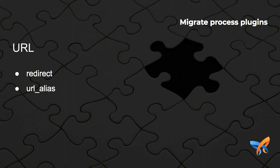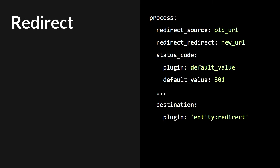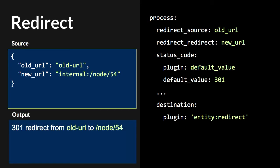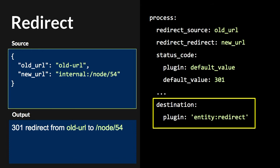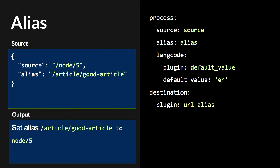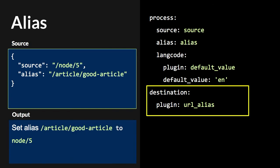For URLs, if you need to handle URL redirects or aliases — redirect is an entity in Drupal 8, so we can do a simple migration and it will import the data into the redirect entity using the destination plugin. The same for aliases: with the URL alias destination plugin, you are able to give your content SEO-friendly URLs.